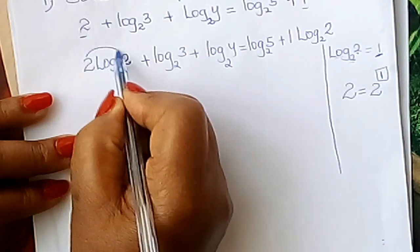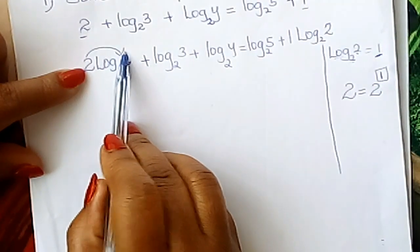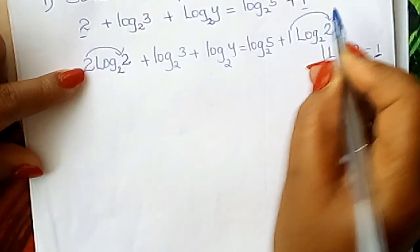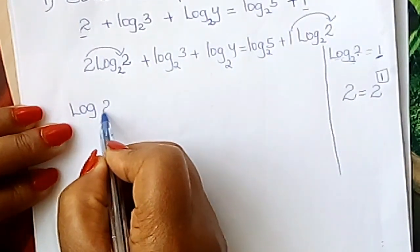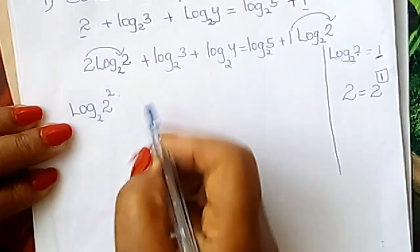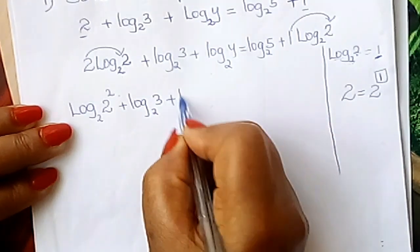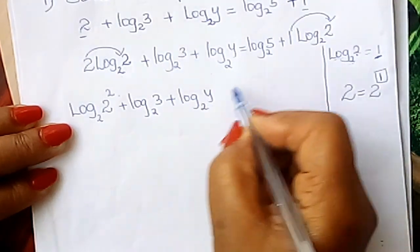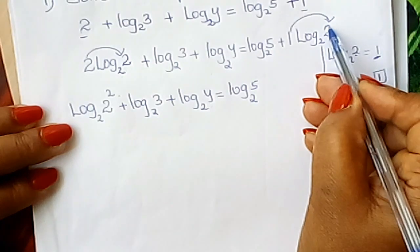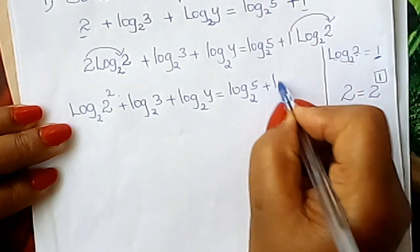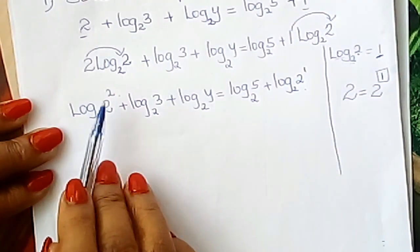Okay, from here, take this up. According to another log law, this number is the same as the power of this. This one here comes here as a power. So what do I write now? I write it as log₂(2²) there, and then I write the others: log₂3 plus log₂y is equal to log₂5 plus this one I indicate there.